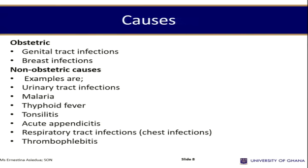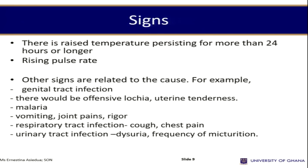Non-obstetric causes of puerperal pyrexia include urinary tract infections, malaria, typhoid fever, tonsillitis, acute appendicitis, respiratory tract infections or other chest infections, and thrombophlebitis, which can cause pyrexia in the early stages of the puerperium.